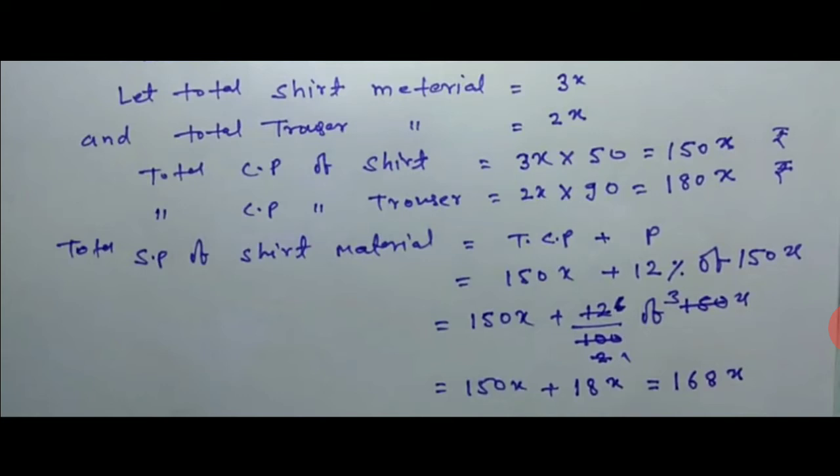Now total selling price of shirt material. To find the total selling price, we need the total cost price plus profit. If you have a profit percent given, we will change the profit into actual amount, which we calculate from the total cost price. The total cost price given is 150x. So this will be total CP, which means 150x plus profit percent of total CP.